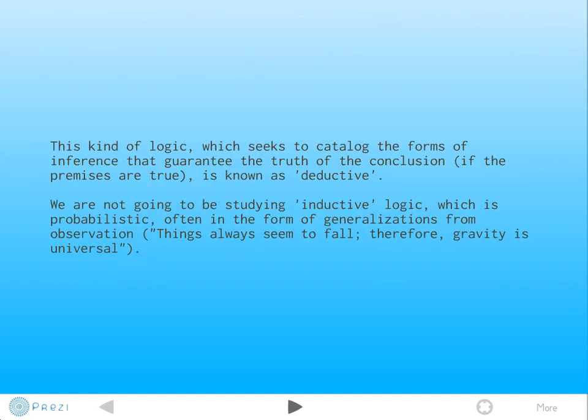The kind of logic we're concerned with seeks to catalog the forms of inference that guarantee the truth of the conclusion if the premises are true. We call this deductive logic. It's in contrast to inductive logic, which we're not going to be looking at. That's kind of probabilistic, often taking the form of a generalization from observation. Things always seem to fall, therefore gravity is universal. We haven't observed everything in the universe, but based on what we've seen, we generalize to all cases.